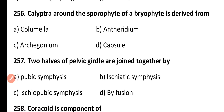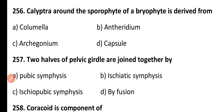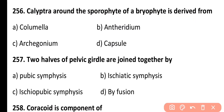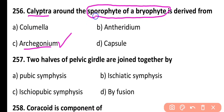Question 256. Calyptra around the sporophyte of a bryophyte is derived from: glumella, antheridium, archegonium, or capsule. Correct answer is Option C. Calyptra is a specialized structure derived from the archegonium and is present around the sporophyte of bryophytic plants.